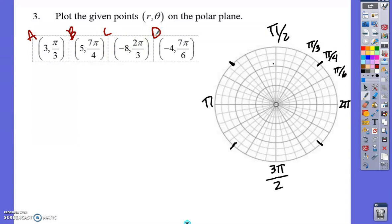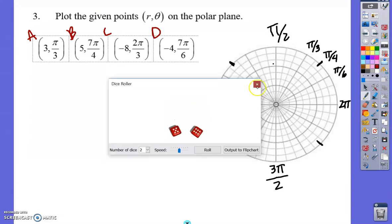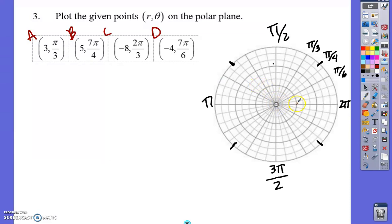We're going to start with A, which is 3 and π/3. So we move from the radius three radius units out here to this first dark circle, and then we move to π/3. There's π/6, there's π/3, there's A. Straightforward plotting.